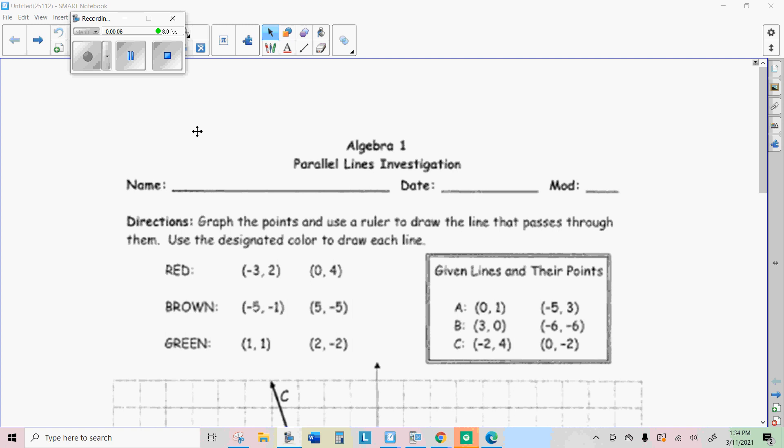Howdy there internet students. Mr. Hermansen again. Today we're going to be doing lesson 6.2d. We're going to start with a little bit of an investigation and discovery. This will help you understand the objective of this lesson, which is to identify parallel and perpendicular lines by their graphs, their equations, and their tables using slopes.